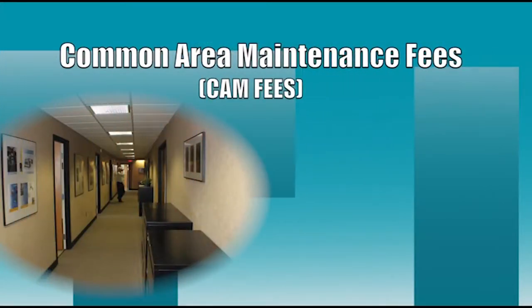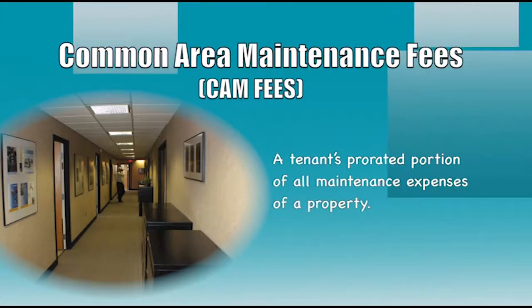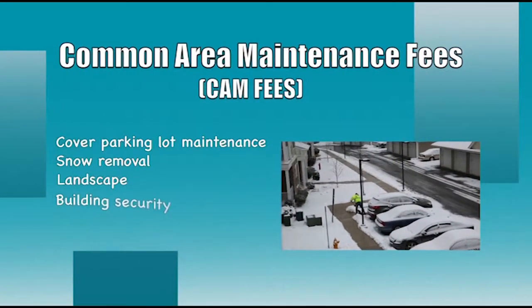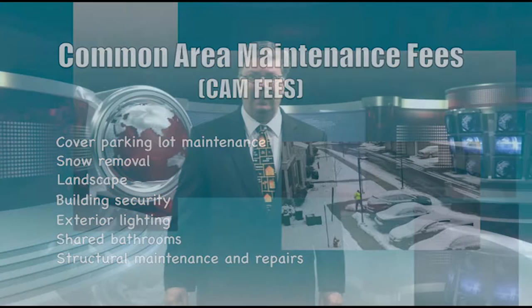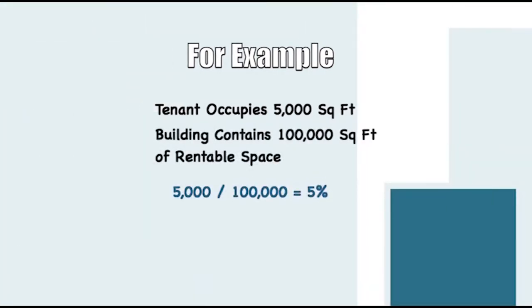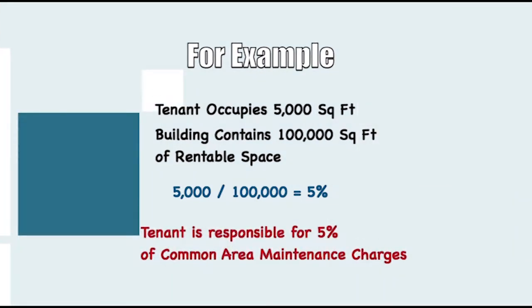Common area maintenance fees (CAM fees) are a tenant's prorated portion of all maintenance expenses of a property. In a triple net lease, part or all of building maintenance costs may be passed through to the tenant. CAM fees cover parking lot maintenance, snow removal, landscaping, building security, exterior lighting, shared bathrooms, and even structural maintenance. Landlords may estimate CAM charges as a fixed amount per square foot, or calculate actual expenses based on the tenant's percentage of rentable space. For example, a tenant occupying 5,000 of 100,000 square feet is responsible for 5% of total CAM charges.